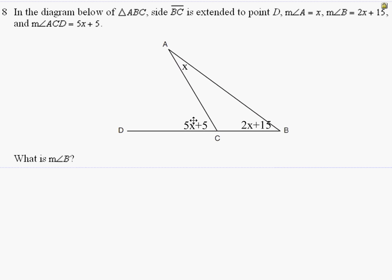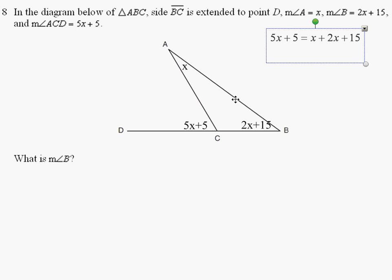And that says that the exterior angle is equal to the sum of the remote angles. So let's go ahead and write that. The exterior angle, 5x plus 5, equals the sum of x and 2x plus 15.